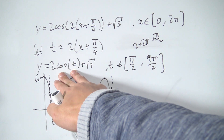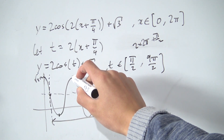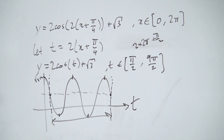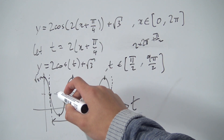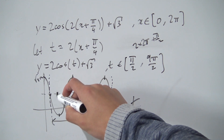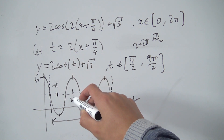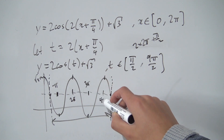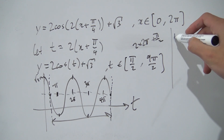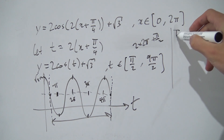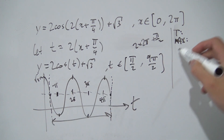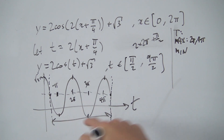Since we have our original cosine graph, we can quite easily figure out where our maximum and minimum points are in t. On the cosine, maximum and minimum points appear at every multiple of π. So we have turning points at π, 2π, 3π, and 4π. Our maximums are at t = 2π and t = 4π, and our minimums are at t = π and t = 3π.